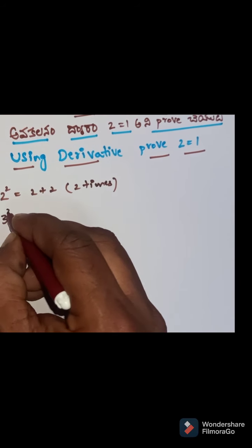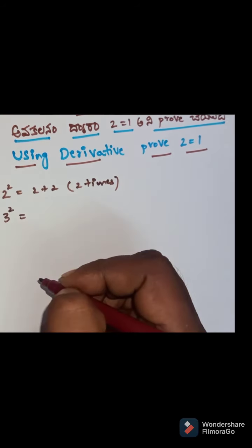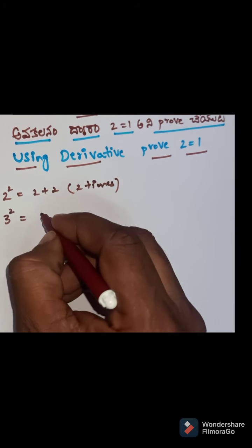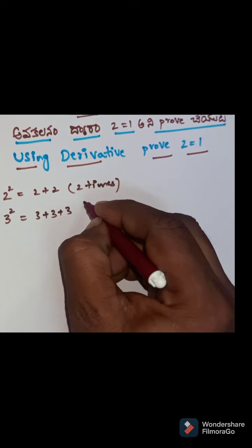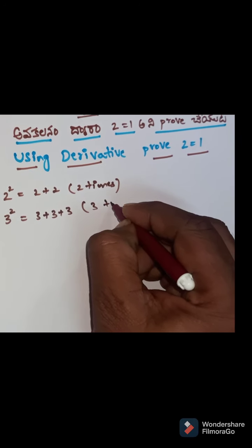3 squared is equal to 9. 3 plus 3 plus 3 means 3 times add.